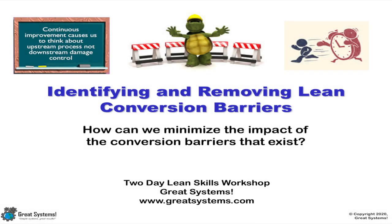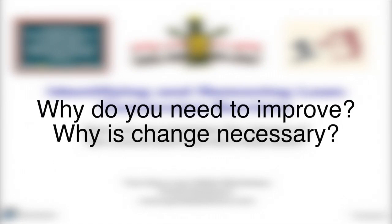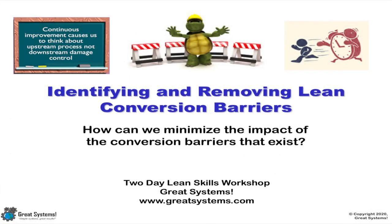Chapter 11: Identifying and removing lean conversion barriers. How can we minimize the impact of the conversion barriers that exist? We ended our discussion of quick changeover by talking about the need for process success and ownership, and the need for systems that encourage versus discourage the use of new ideas and tools. Lean conversion barriers are usually not intentional barriers, but they will constrain the effectiveness of your lean improvement effort. Most performance improvement efforts fail to be sustained because management simply provides new tools and some training, without installing the new and improved systems needed to effectively support the use of those tools over time.